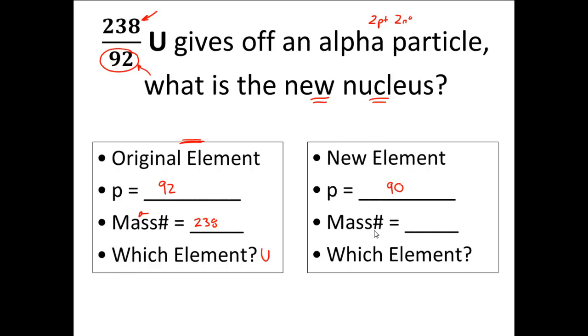The mass number is the number of protons and the neutrons. And originally you had 238. But you lost two protons and two neutrons, so your new nucleus is going to be four particles smaller. Or 234 is your new mass number. And which element is this? Well look up element number 90 on the periodic table, and element 90 is Thorium. And so the new element is 234 over 90 Thorium.